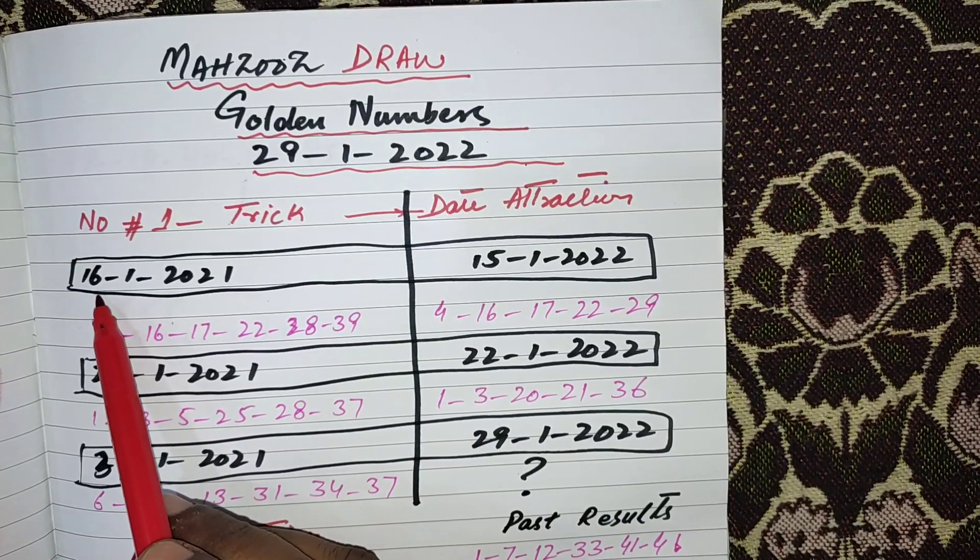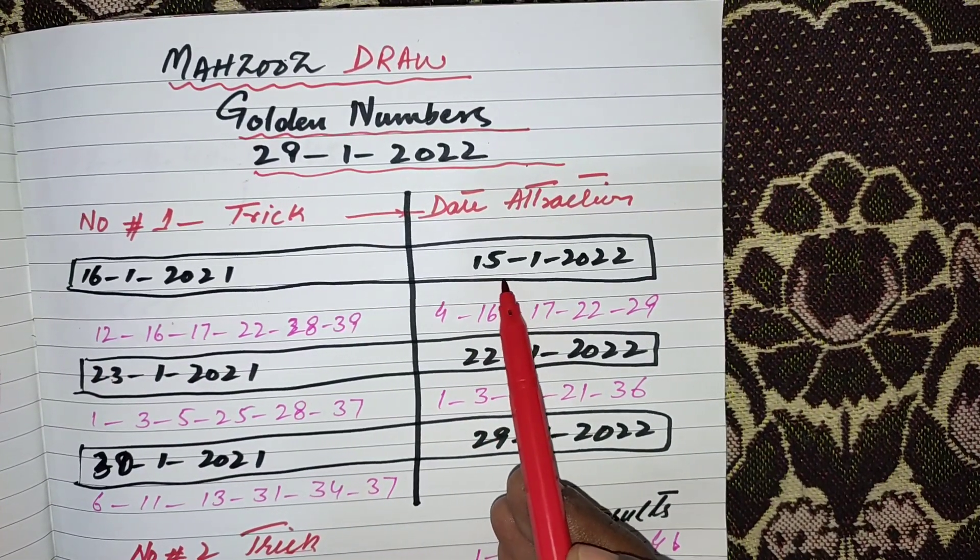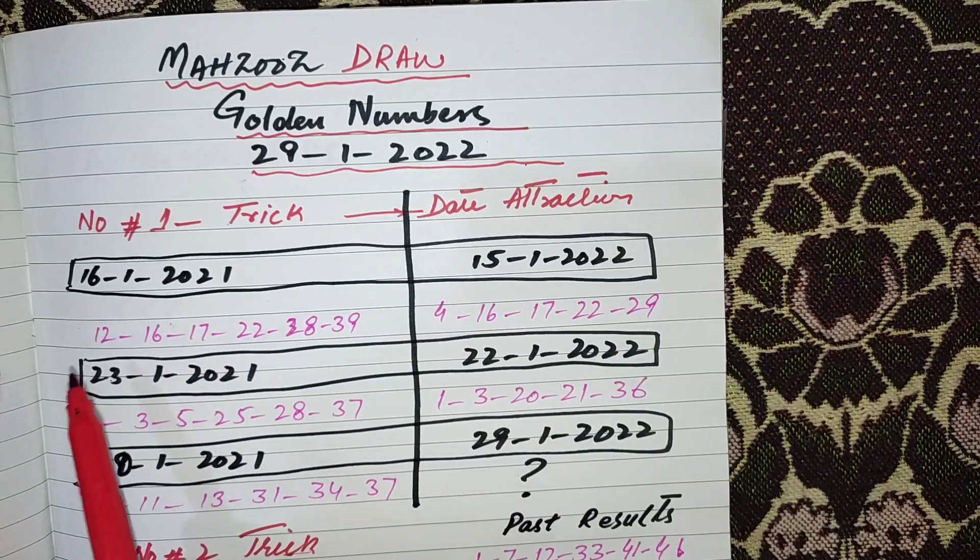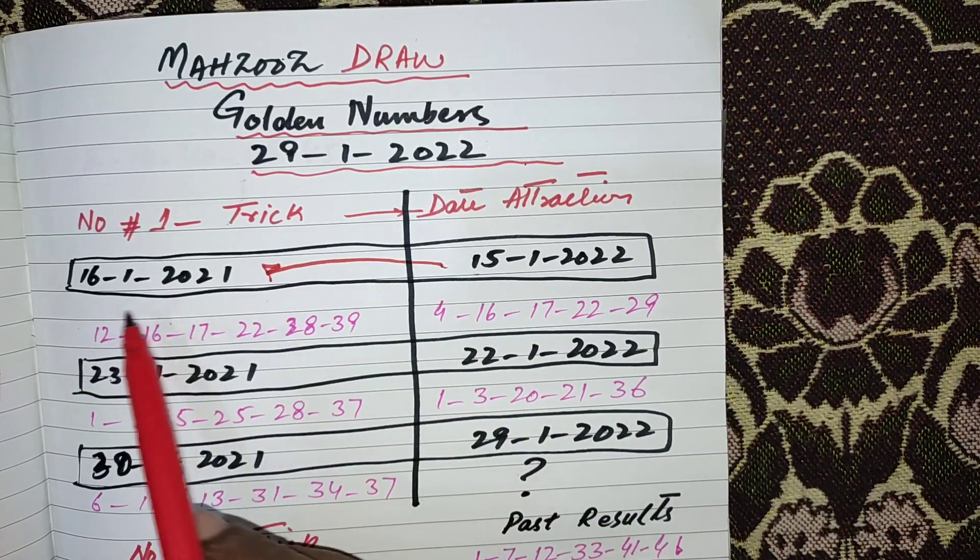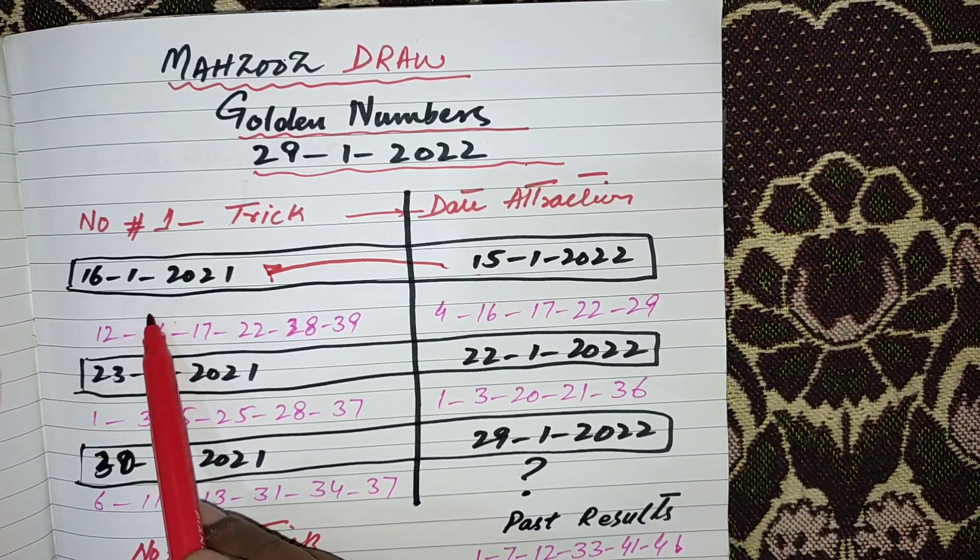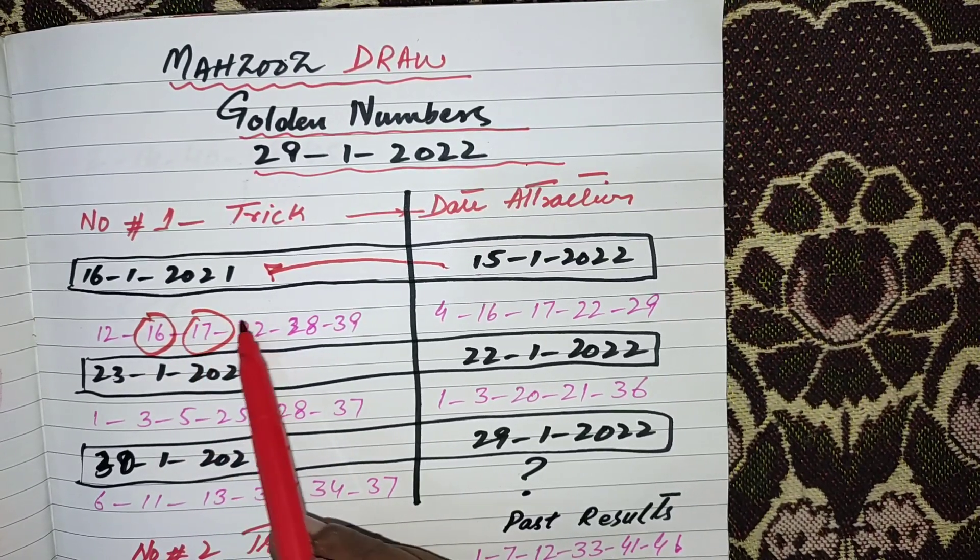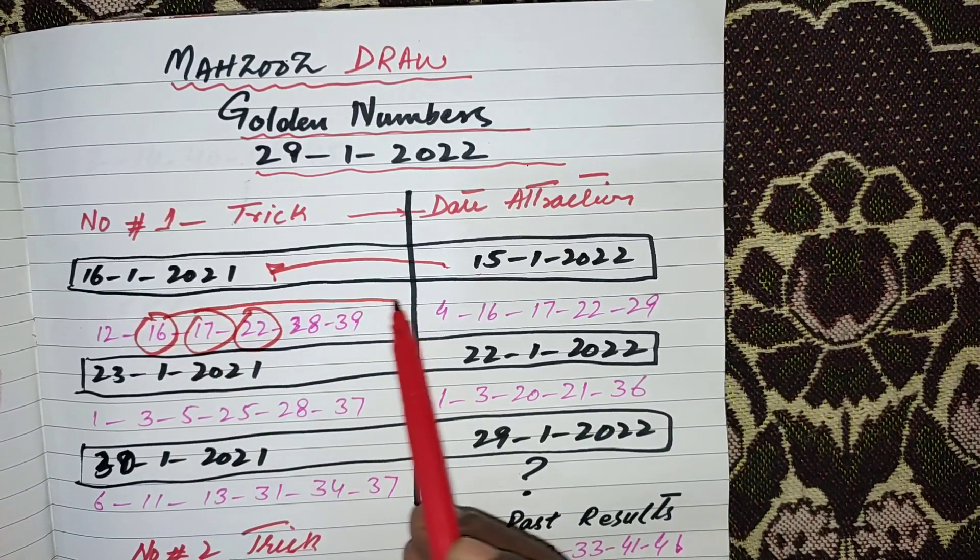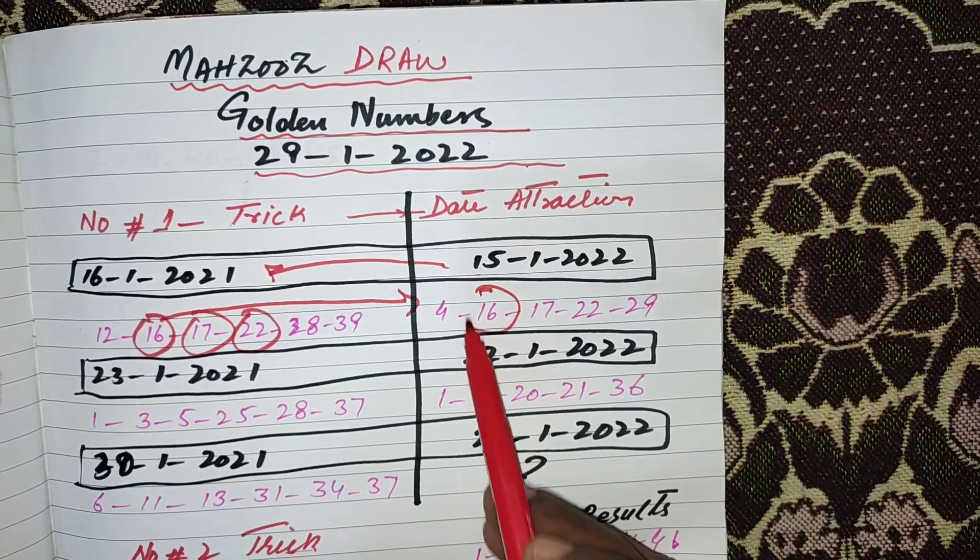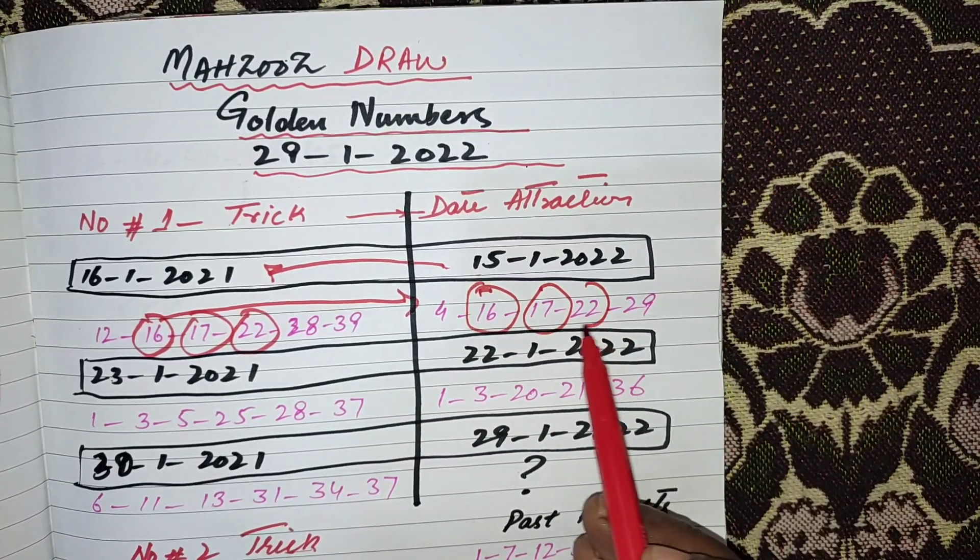You can see when the draw was held on 15th January 2022, it is the same date of previous years result. 16, 17, and 22 came in the next same year date: 16, 17, 22.